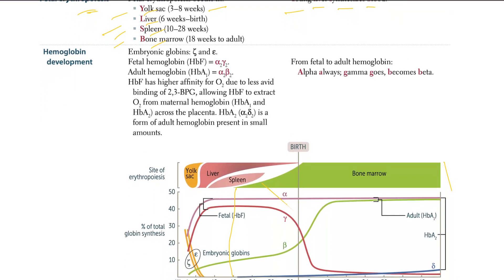Next we have the hemoglobin development. And embryonic globin, embryonic globin, which is what it is, is delta and epsilon. In embryonic globins, we have this thing, I don't know what it's called, you can pronounce it, maybe zeta or something, and epsilon.